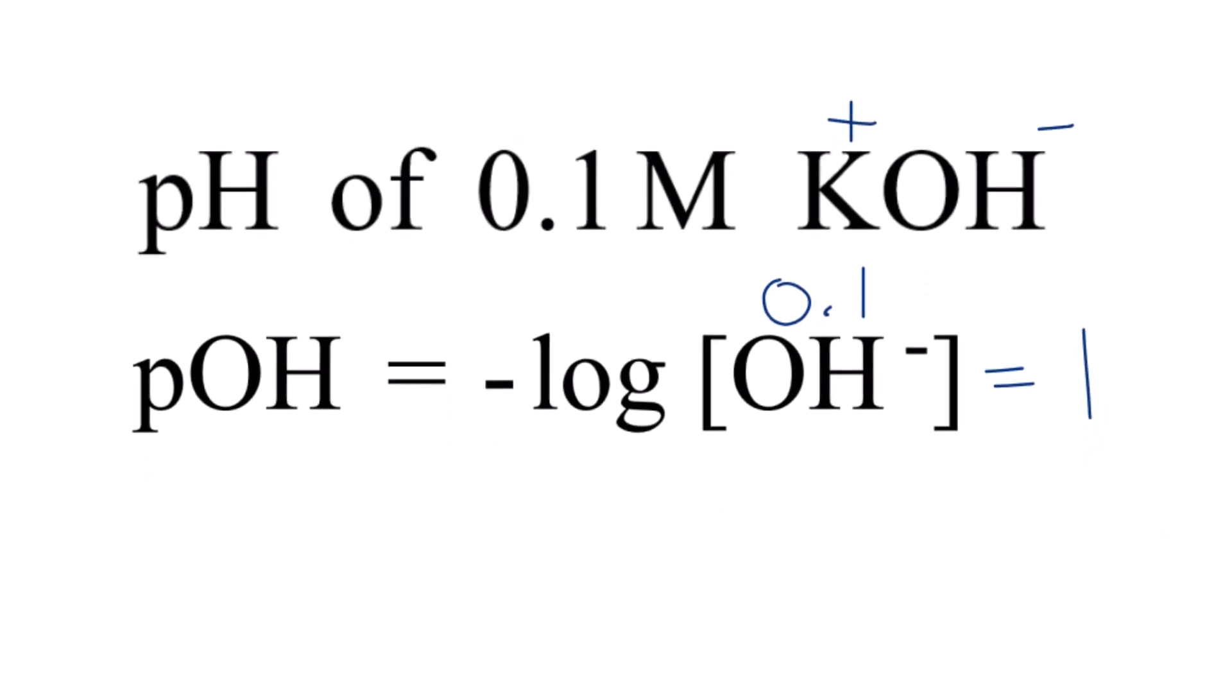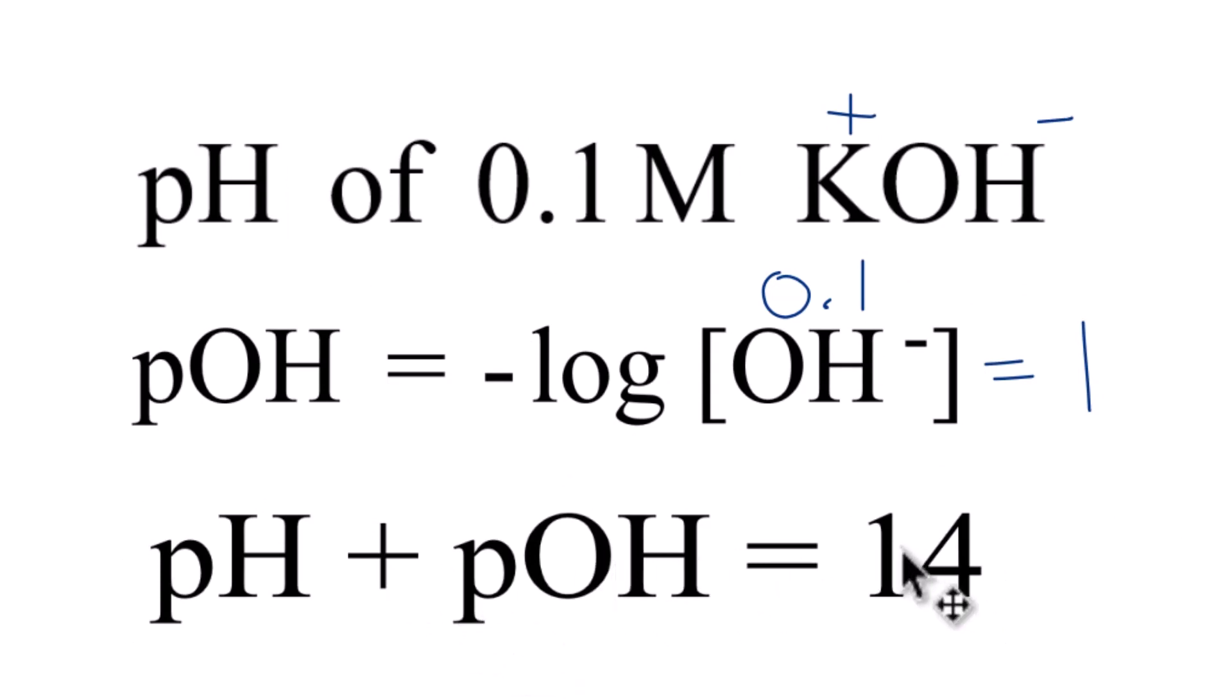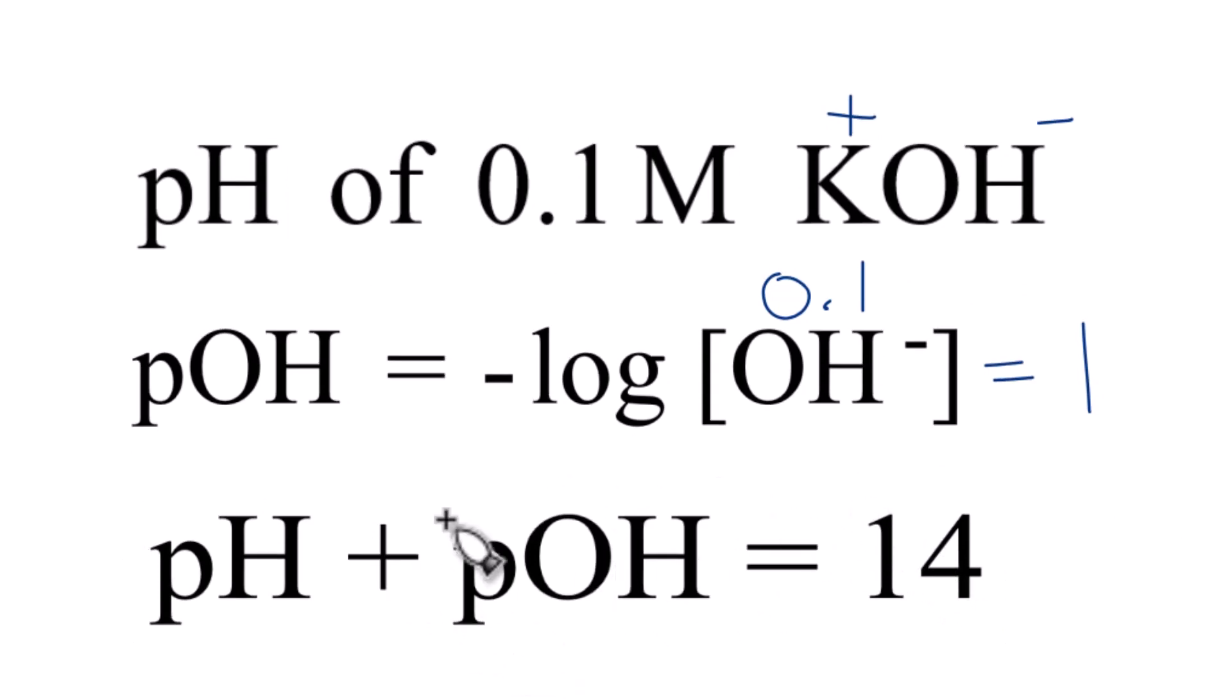Now we can find the pH using this formula: pH plus pOH equals 14. We know that pOH is 1.